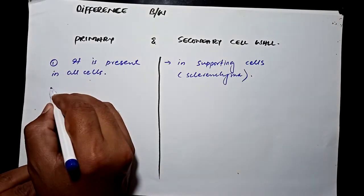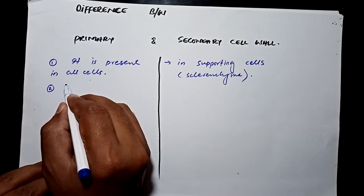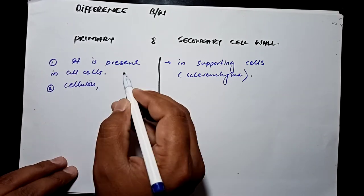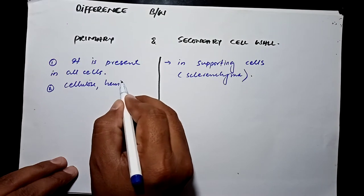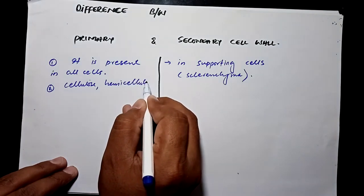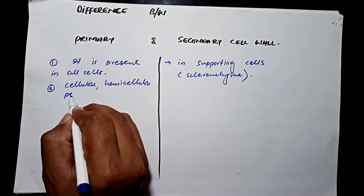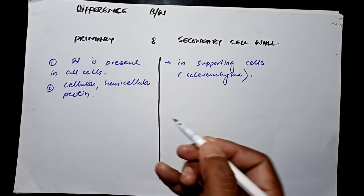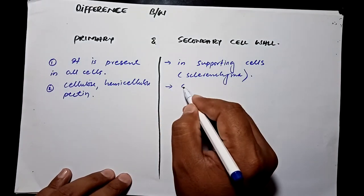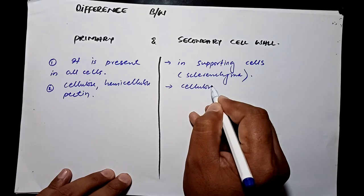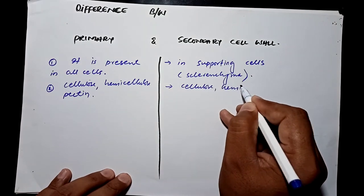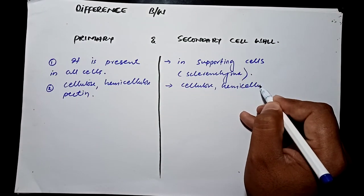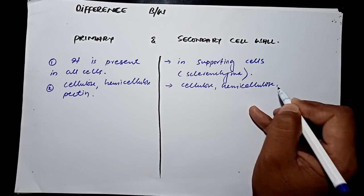Composition: primary cell wall is made up of cellulose microfibers along with hemicellulose and pectin. Secondary cell wall is made up of cellulose as well as hemicellulose, lignin, and less inorganic salts.